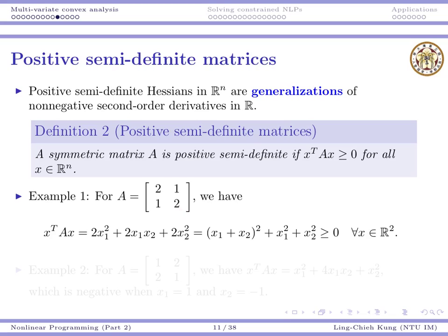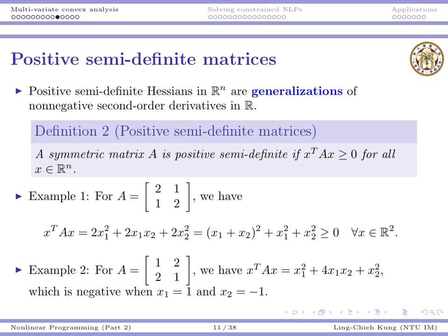Suppose I have matrix A; let's calculate x-transpose Ax, where x is [x1, x2]. x-transpose Ax can be shown to equal a specific expression. If you go through the multiplication of the three matrices, you can see this exactly. We can express it as the sum of three square terms, so it is non-negative no matter what x is. This particular A matrix is therefore positive semi-definite according to the definition.